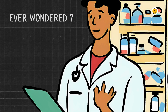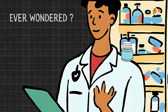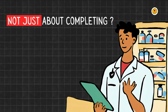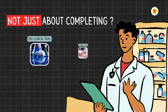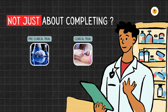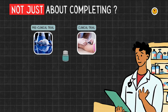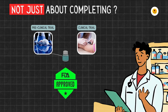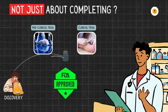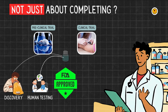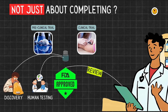Have you ever wondered how a drug ends up on the shelves of your pharmacy? It's not just about completing preclinical or clinical trials. The drug must pass the ultimate test by the FDA, where every detail, from the discovery of the molecule to its testing in humans, is reviewed in a document called the New Drug Application.